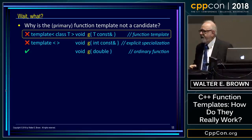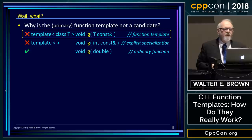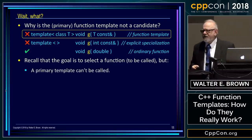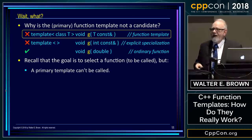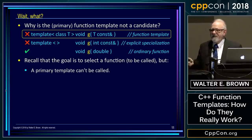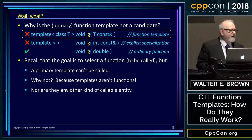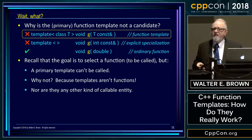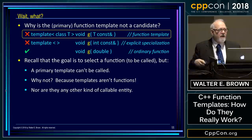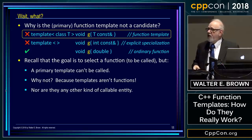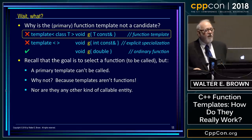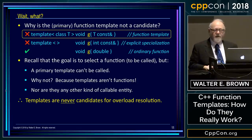A lot of people ask why the template itself is not a candidate. The answer is surprisingly simple: templates don't have function-like behavior. You can't call a template. So why consider it as a candidate? You can never pick it — you can't call it. Templates are not functions and are not any other kind of callable entity. There are lots of things you can call — function pointers, objects with operator() — but a function template is none of those things. Therefore, templates are never candidates for overload resolution.